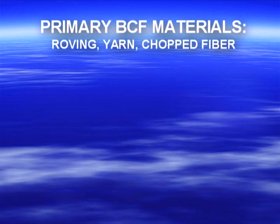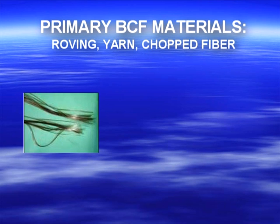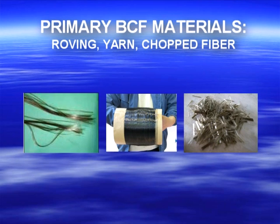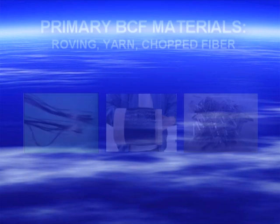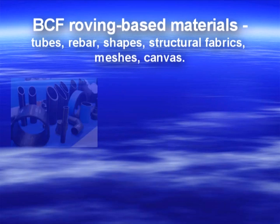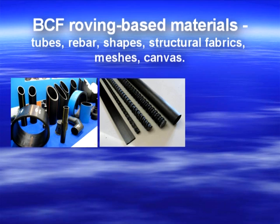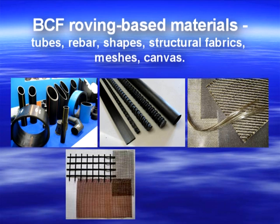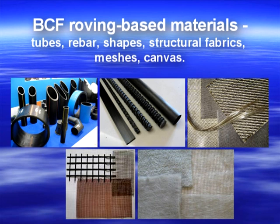Primary BCF materials include roving, yarn and chopped fiber. BCF roving-based materials include tubes, rebar, shapes, structural fabrics, meshes and canvas.